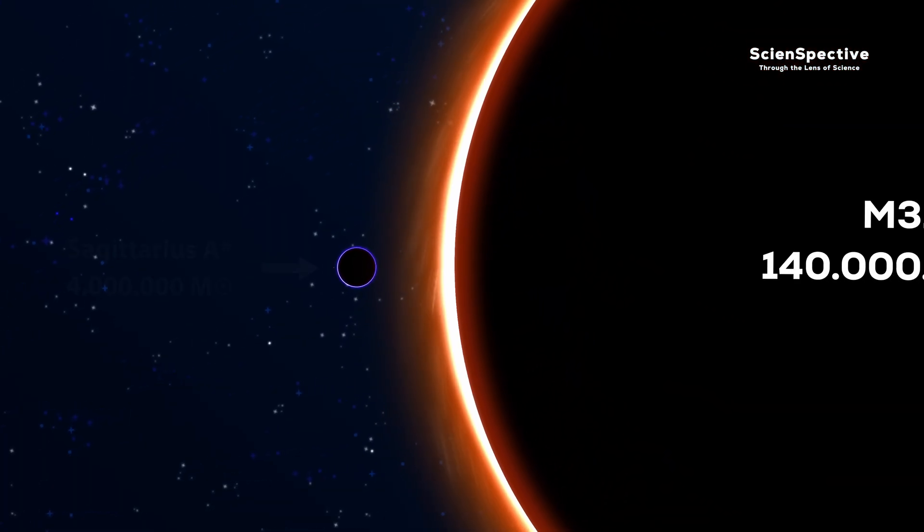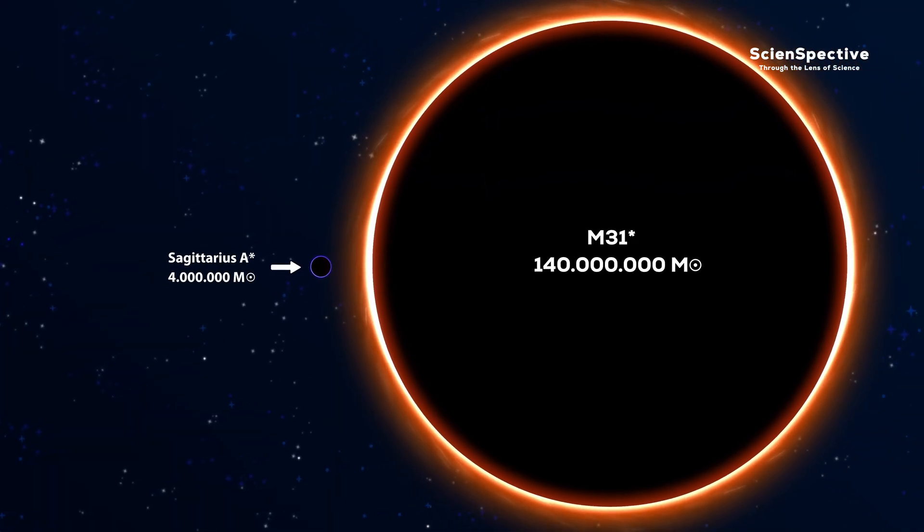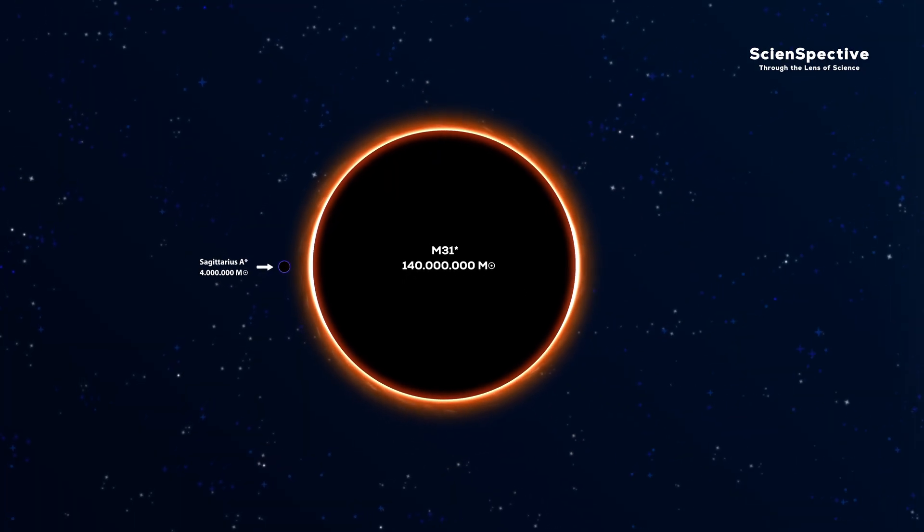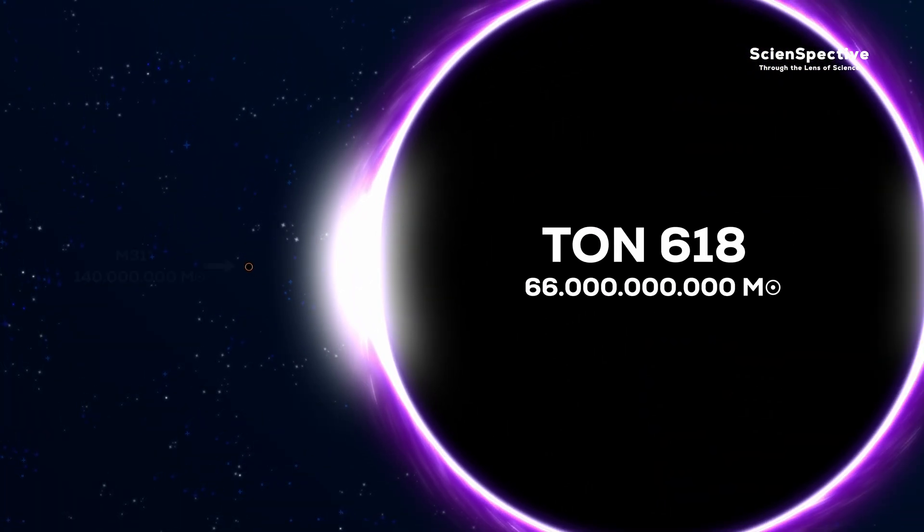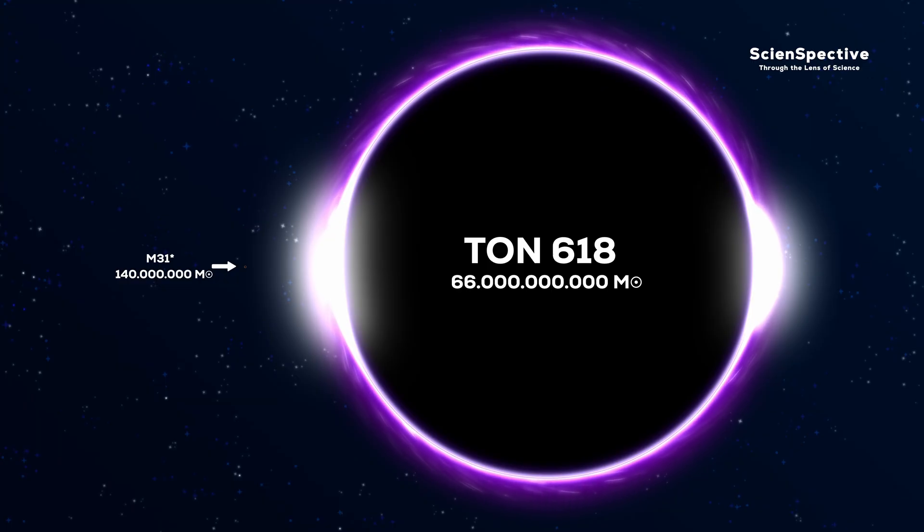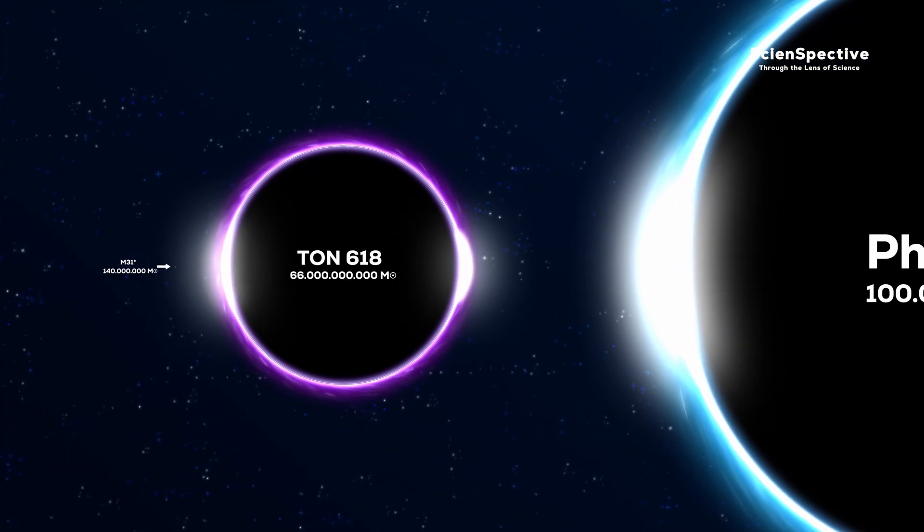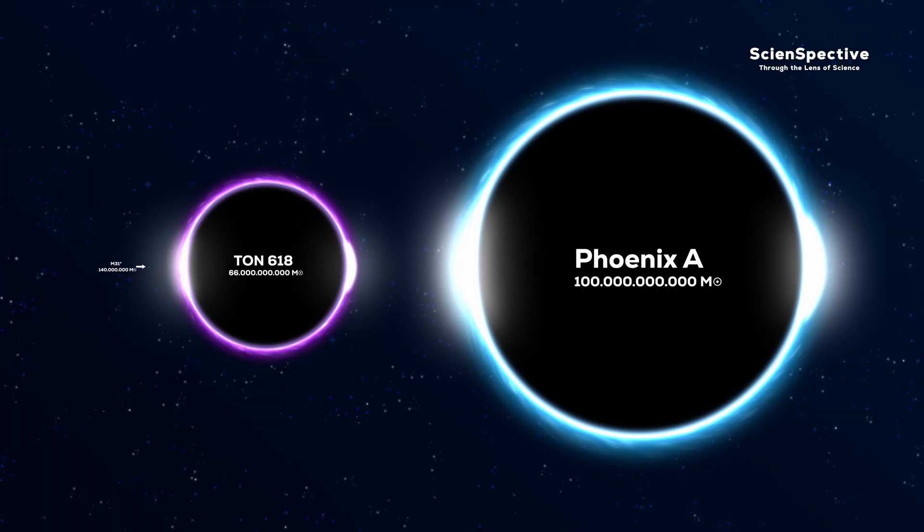Despite its size, ours is small compared to others. For example, the nearby Andromeda galaxy has one 25 times larger. Even these are minor compared to the largest found so far. More than 10 billion light years away, there's a black hole with 66 billion solar masses, enough to fit 11 of our solar systems side by side. But even that is smaller than the largest black hole discovered so far, Phoenix A. It has a mass of 100 billion suns, and it would take us thousands of years to travel around it just once.